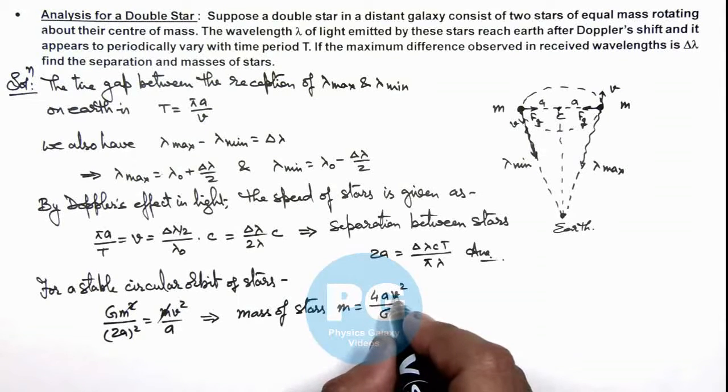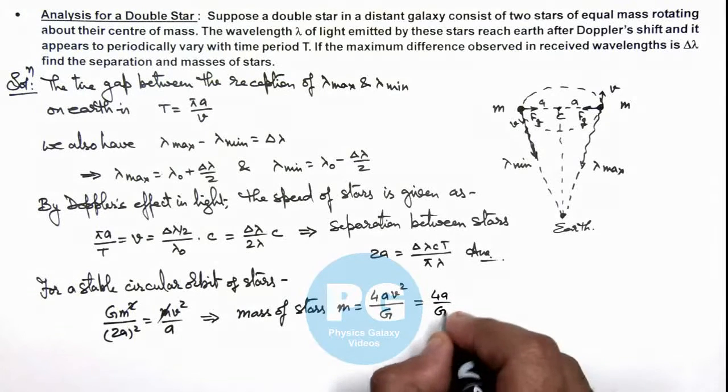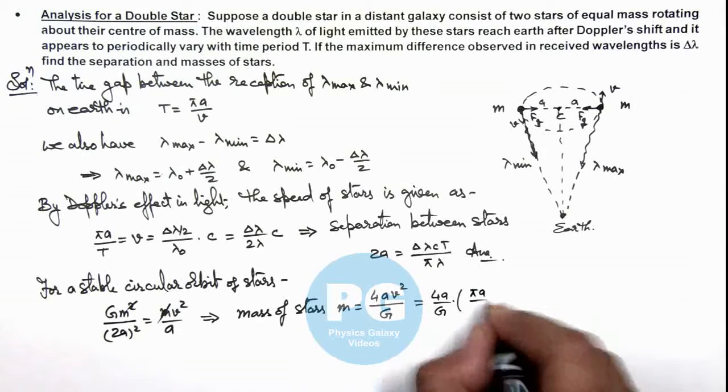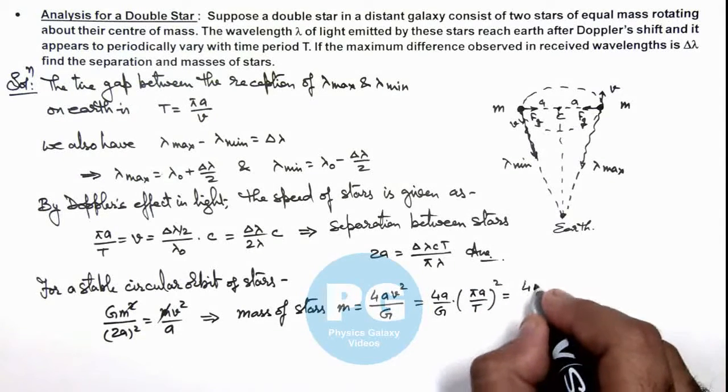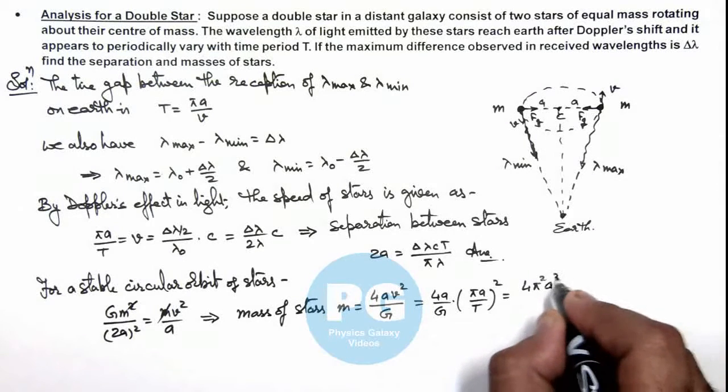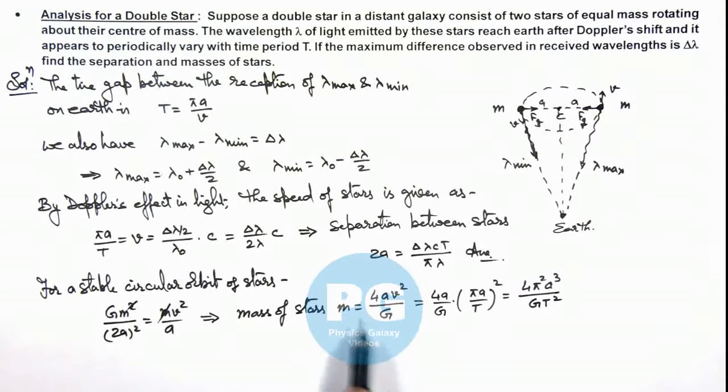And if we substitute the value of v here, you can see the value is 4a/G multiplied by v is πa/T whole square, which gives us 4π²a³ divided by GT².